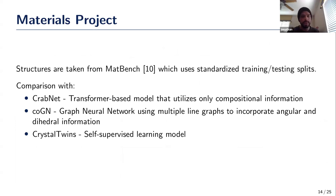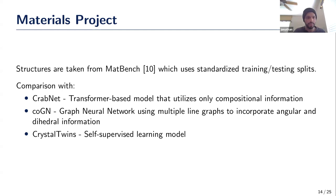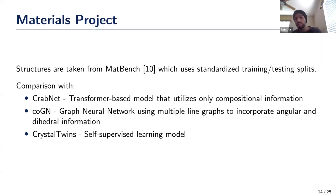For the Materials Project, we used MatBench, a standardized test suite with various properties and crystals divided into training and testing sets using five-fold cross-validation. We compared against three models: CrabNet, which is most similar to ours but uses only compositional information with no structural data; CoGN, a graph neural network using multiple line graphs incorporating angular and dihedral angle information, which was state-of-the-art at time of publication; and Crystal Twins, a self-supervised learning model that learns crystal representations passed through a simple MLP.